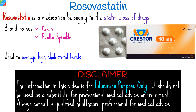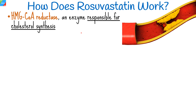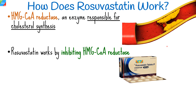How does rosuvastatin work? The mechanism of action of rosuvastatin involves its interaction with HMG-CoA reductase, an enzyme responsible for cholesterol synthesis in the body. By inhibiting this enzyme, rosuvastatin effectively reduces the production of cholesterol.